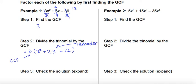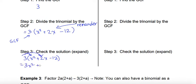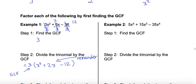You can always check your solution by using the distributive property, which is a good strategy to make sure you're doing these questions correctly. So 3 times x squared is 3x squared, 3 times 2x is positive 6x, and 3 times negative 12 is negative 36. Is that the same expression I started with? Yes, so I know I've done this correctly.